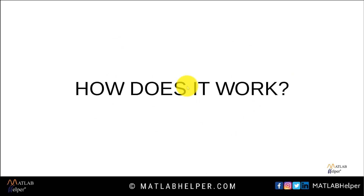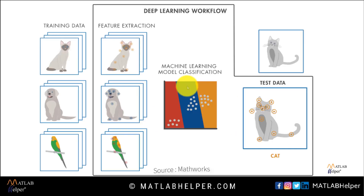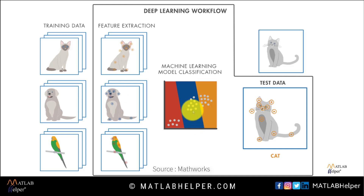Now let's see how it works. First, we keep a separate set of training data. The next few layers will perform feature extraction. The next few layers will perform classification of the training data simultaneously while learning. Hence, a plot will be obtained which will classify the object as either cat, dog, or parrot in this case.